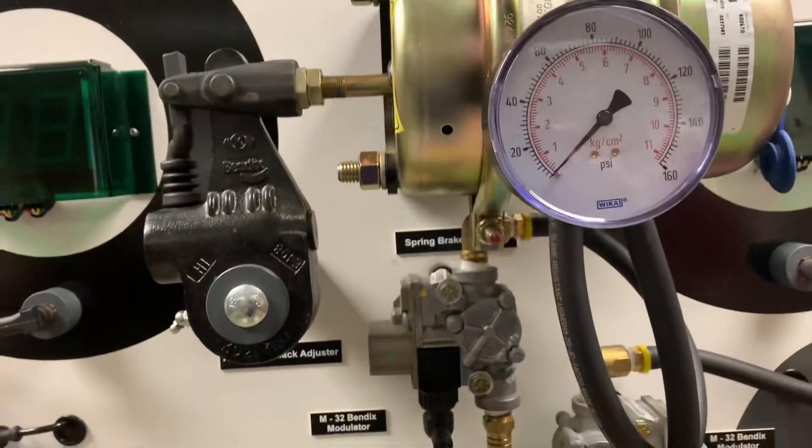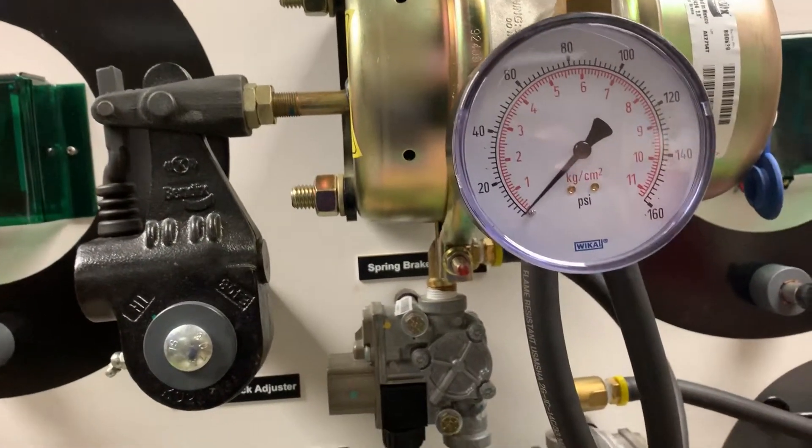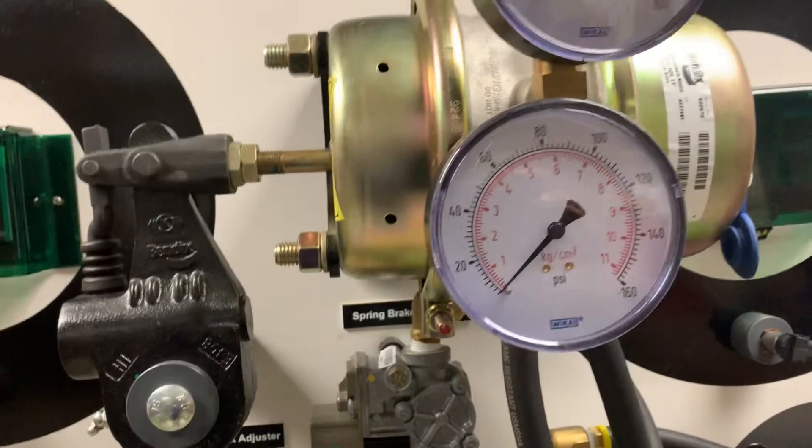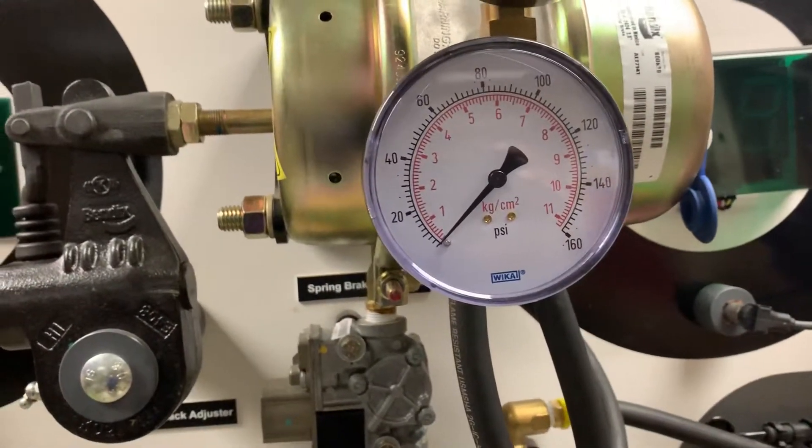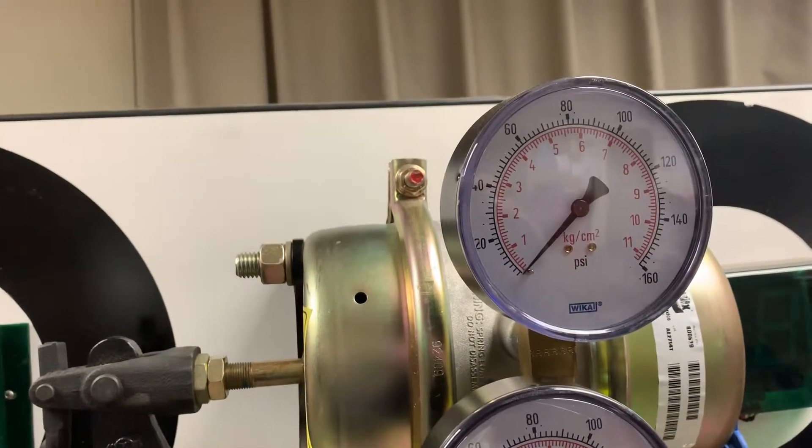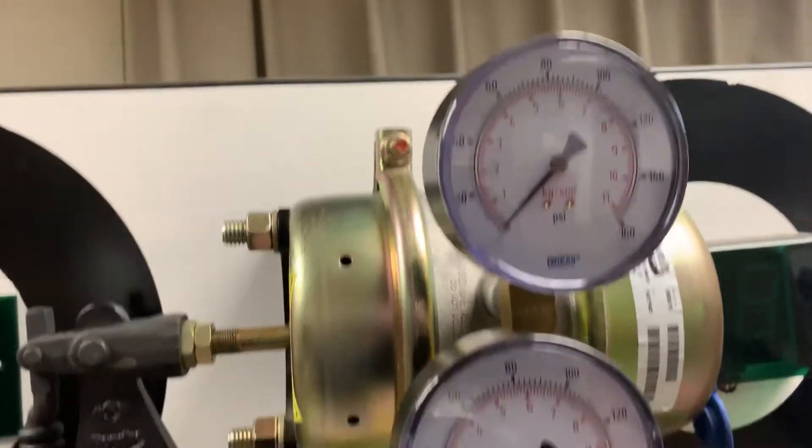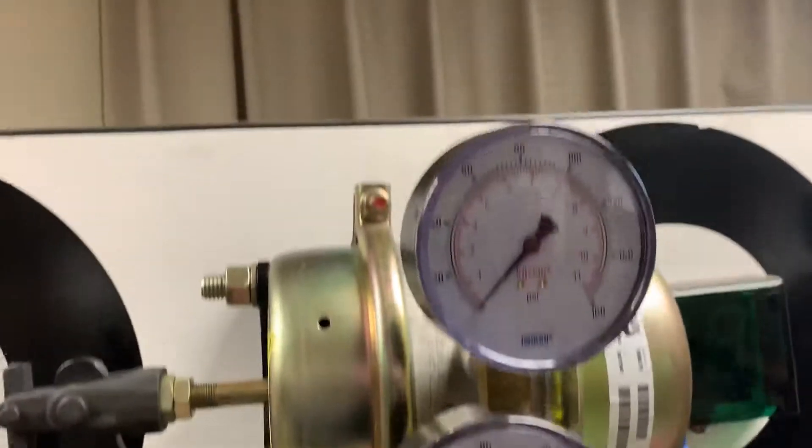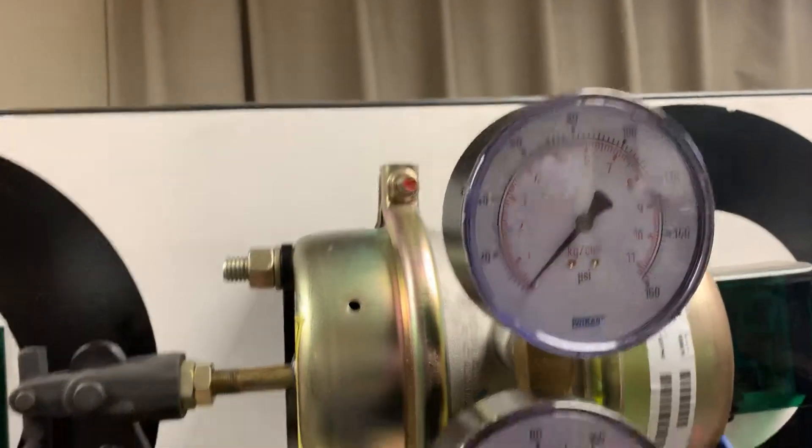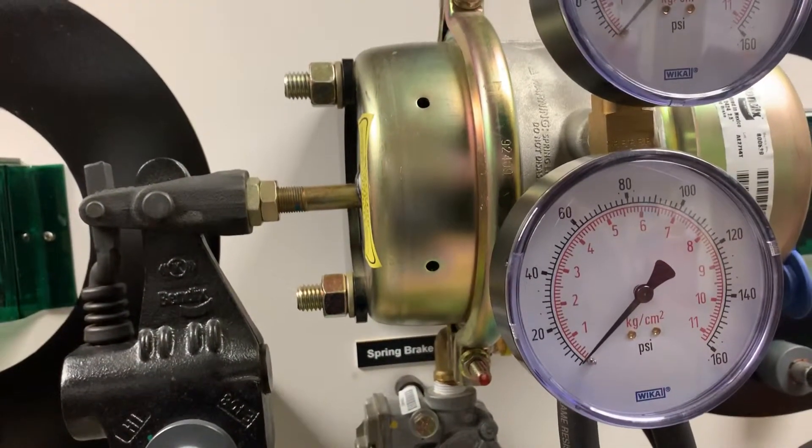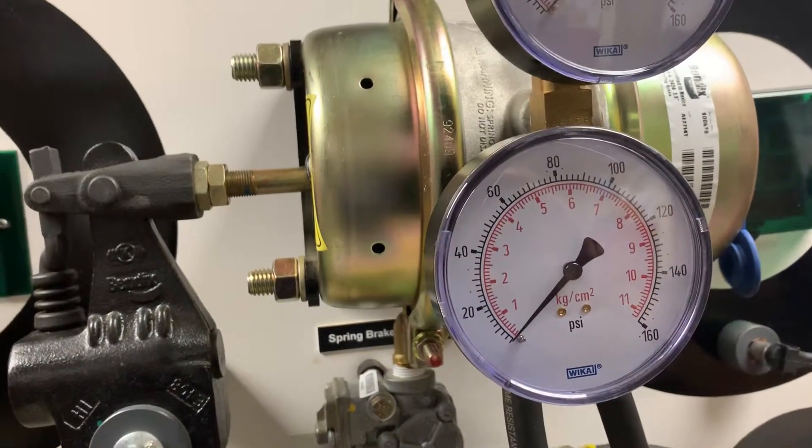So here we see no air pressure on the service side and no air pressure on our hold-off side or our parking brake side. And that's indicating to us what? That the parking brake is set and that the service brakes are not being utilized.